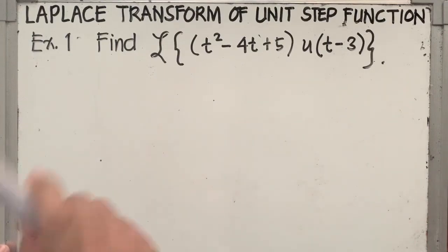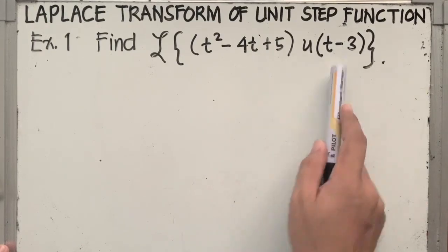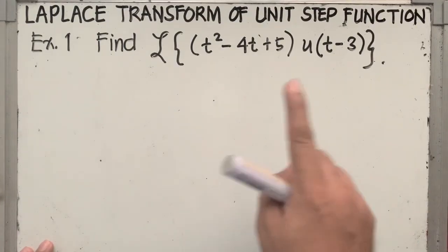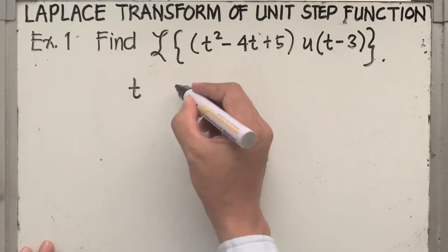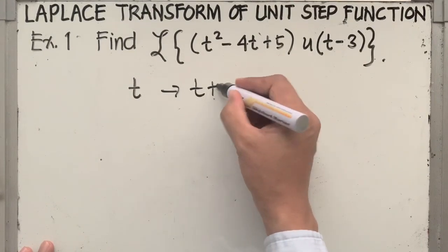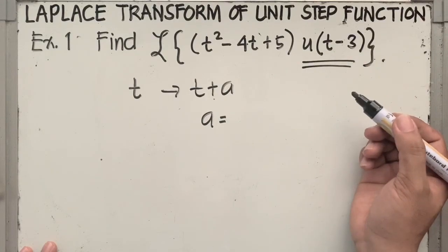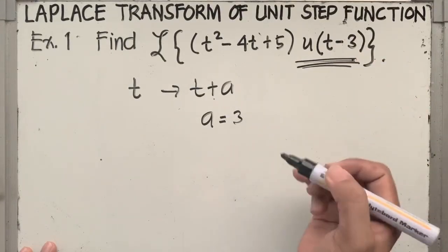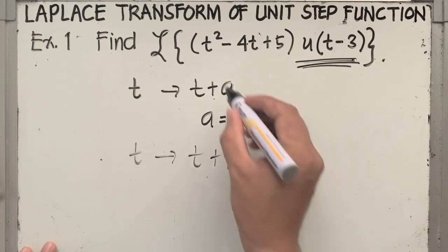Now let's have the first example: find the Laplace transform of t squared minus 4t plus 5 times u of t minus 3. The presence of u of t minus 3 suggests that this is a unit step function. The first step is to replace t by t plus a in function f only. Looking at u of t minus 3, this gives us the value of a, which is 3. So t will be replaced by t plus 3 in function f only.